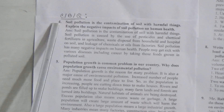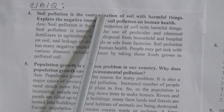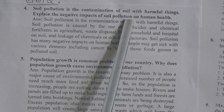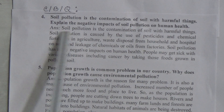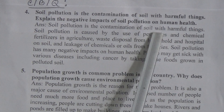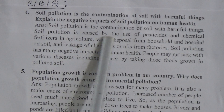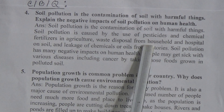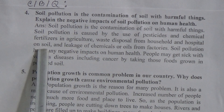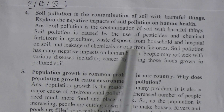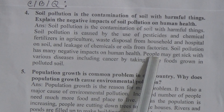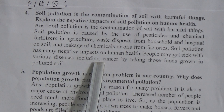CBQ 4: Soil pollution is the contamination of soil with harmful things. Explain the negative impacts of soil pollution on human health. Answer: Soil pollution is caused by the use of pesticides and chemical fertilizers in agriculture, waste disposal from households and hospitals on soil, and leakage of chemicals or oils from factories. Soil pollution has many negative impacts on human health — people may get sick with various diseases including cancer by consuming foods grown in polluted soil.